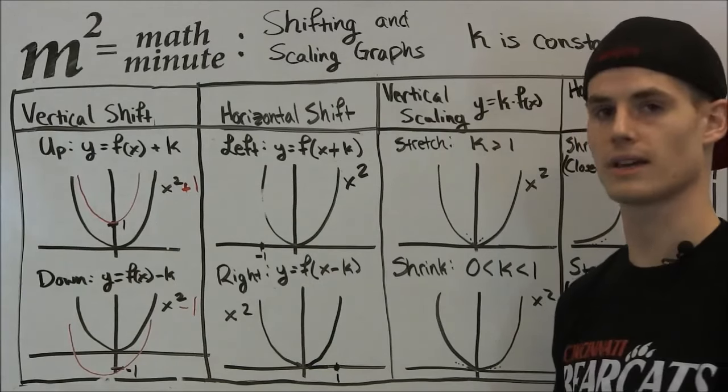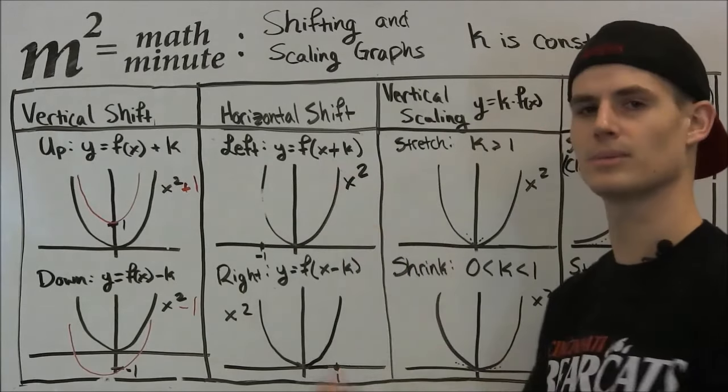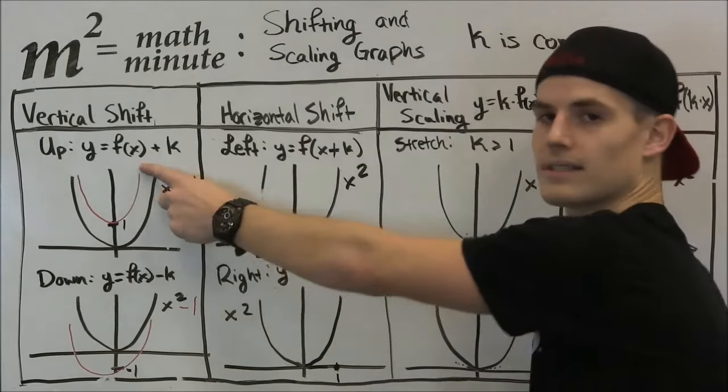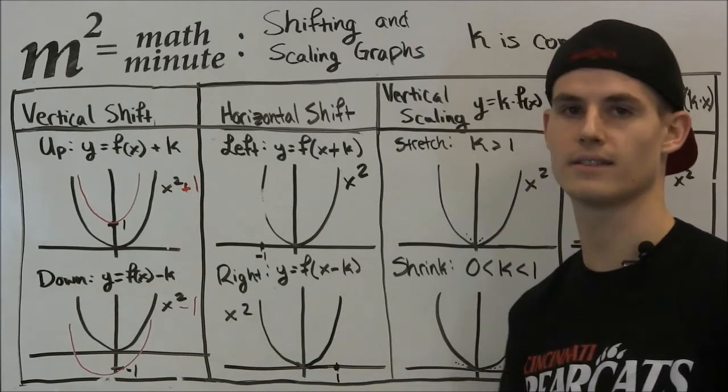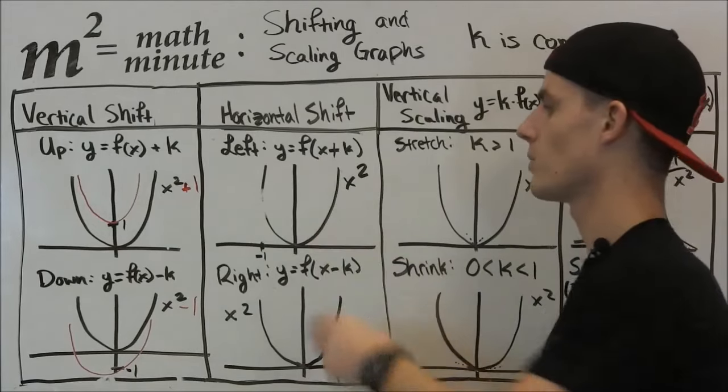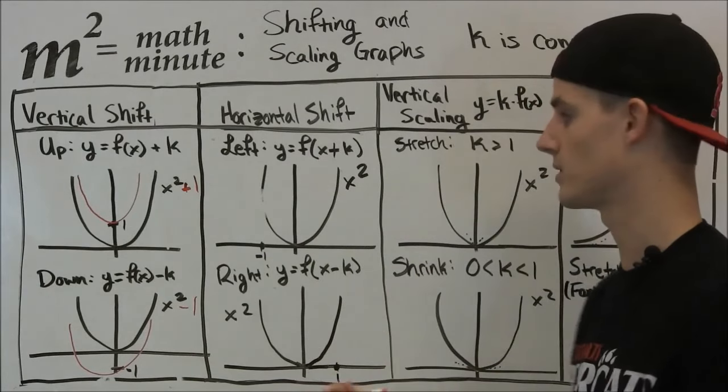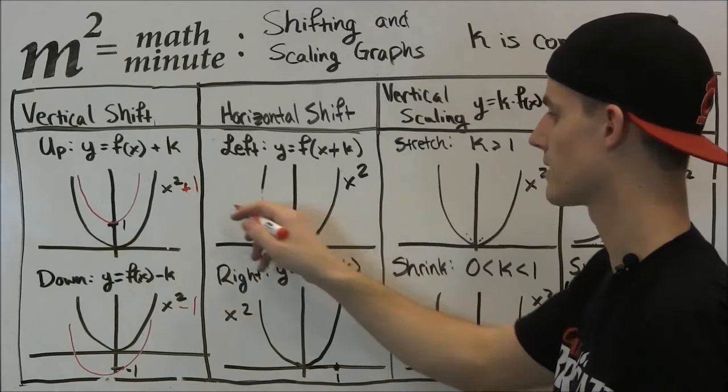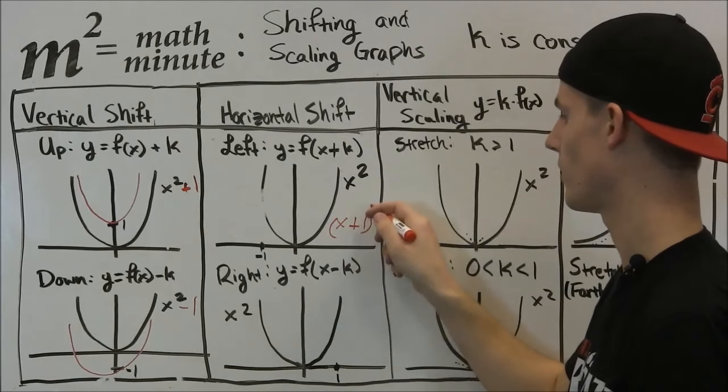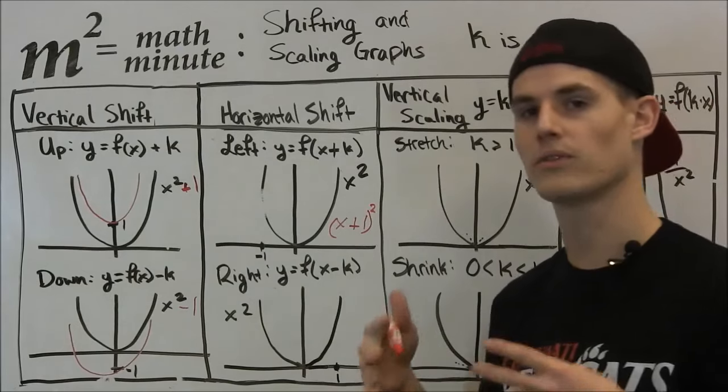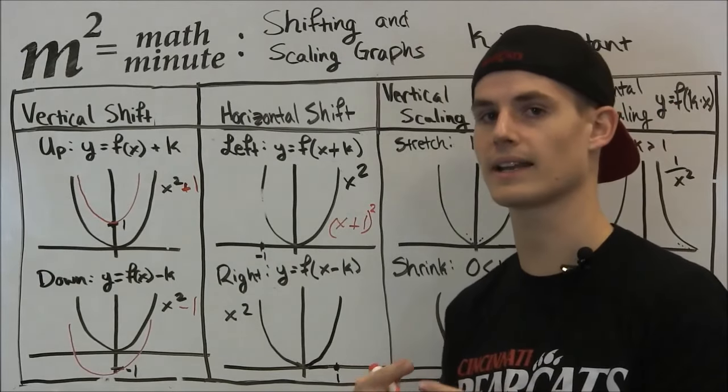Now we're going to talk about horizontal shifts. This gets a little bit more confusing. This was outside the function. So after we already did the problem, we had our answer, we added the value to it. This we're going to add while we're inside the function. So in this case, this would be like (x plus 1) the whole thing squared. So before we're actually finding the answer, we're adding it to the x value.